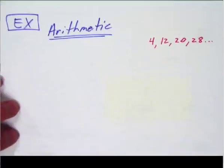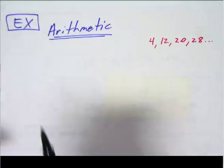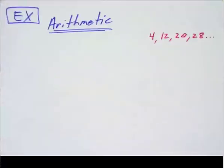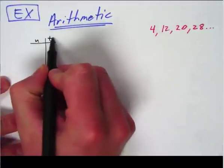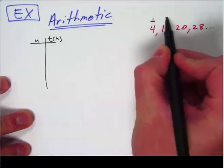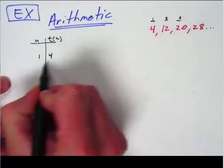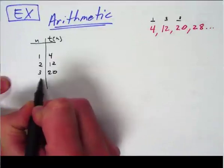A typical sequence would look like this one here, where you've got the arithmetic sequence 4, 12, 20, and 28. What I would recommend doing — or what is typically done — is that you take the sequence and you table it. So you come over here and you say, okay, that would be n and t(n). This is the first number of my sequence, so that's 1, 2, 3, and so on. So then: term 1 is 4, term 2 is 12, term 3 is 20, and term 4 is 28.